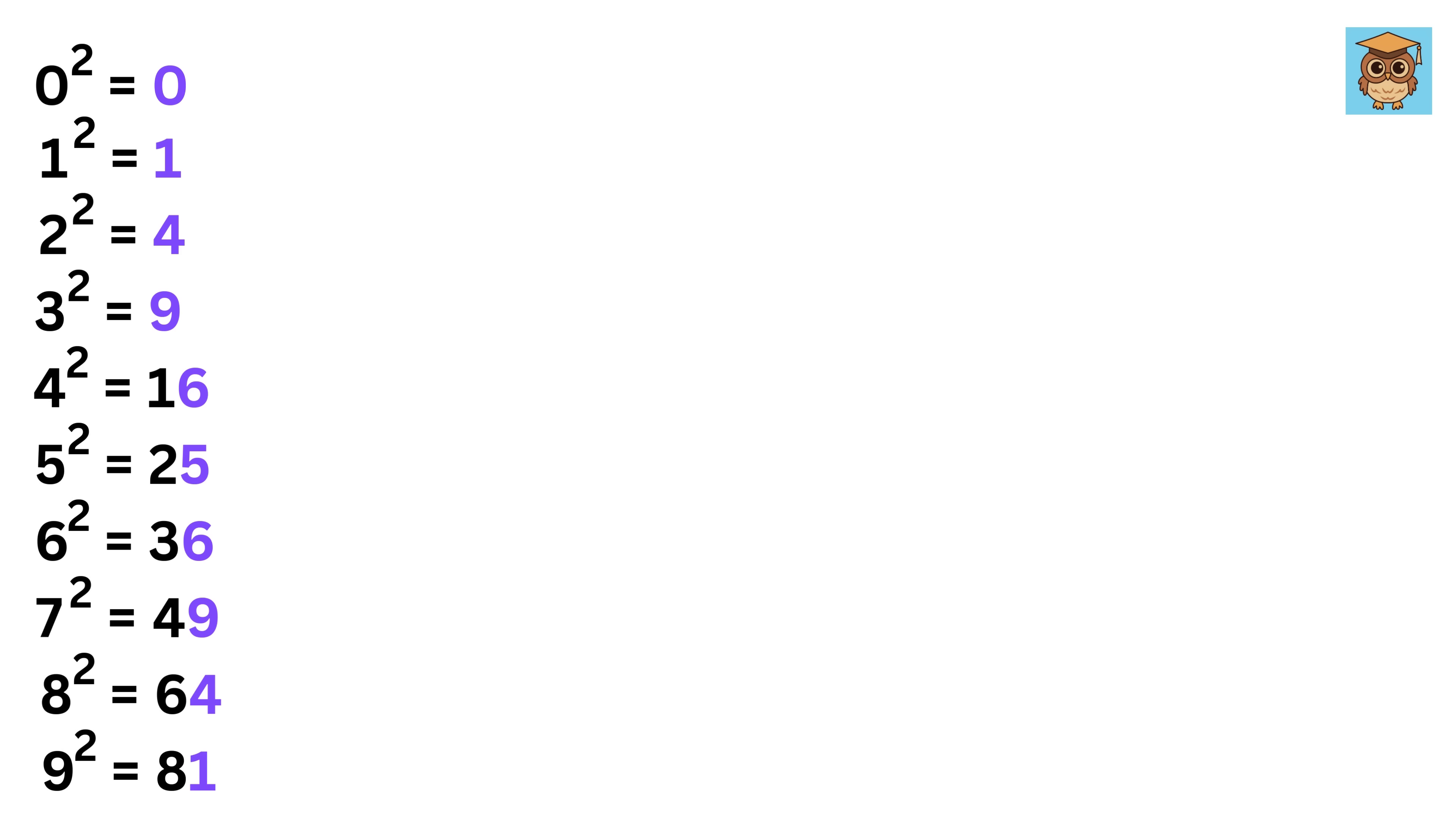Now look at the last digit of each of these squares. I have colored it differently, and when you look at those values, you will notice that some of the squares end up in the same last digit. Like 1 square and 9 square ends up in 1. 2 and 8 square end up in 4. 3 and 7 square end up in 9. 4 and 6 square end up in 6. Last digit of 0 and 5 square do not match with other numbers.